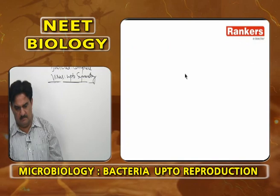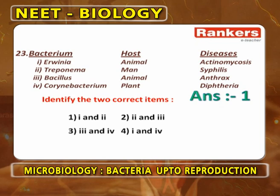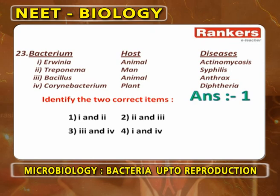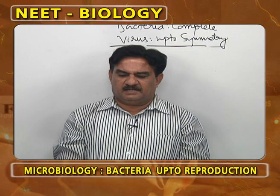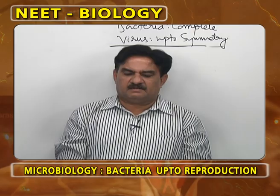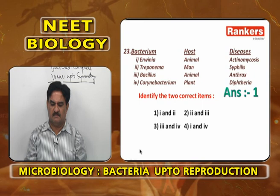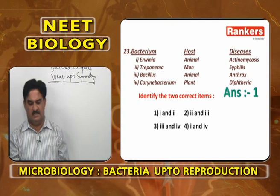Bacterium-host-disease matching: Treponema in man causes syphilis — correct. Bacillus in animals causes anthrax — correct. Corynebacterium causing diphtheria in plants is wrong (diphtheria is a human disease). Erwinia causing actinomycosis in animals is wrong. So 2 and 3 are the correct combinations.